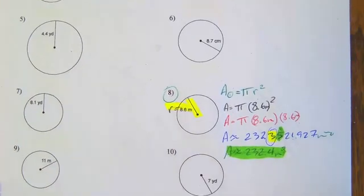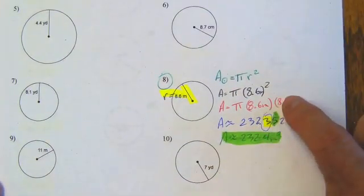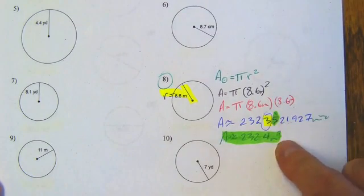On number 8, we take the radius here, which is 6.8. We plug it into the formula. We square it, which means multiply itself. That's why it's a meter times a meter. It gives you a meter squared.